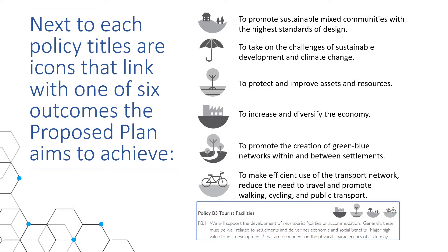To assist with this process and with the interpretation of the vision, six local outcomes have been identified on sustainable mixed communities, climate change, resources, the economy, green-blue networks and transportation. Each outcome has its own icon that can be found next to the title of the relevant policies in the proposed plan. These link the policies back to the plan's vision.